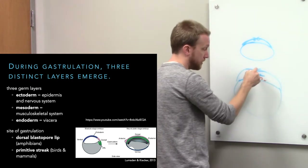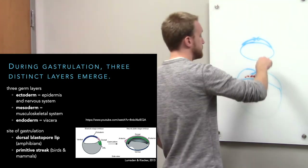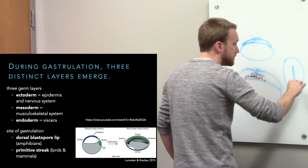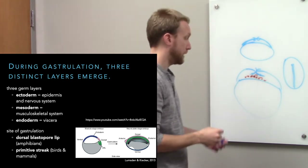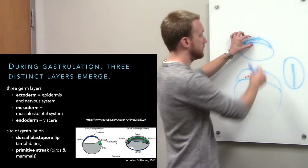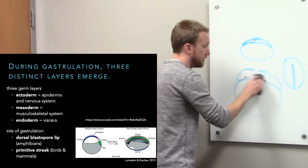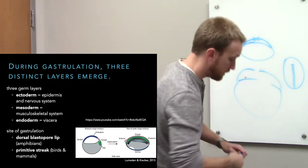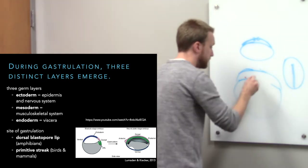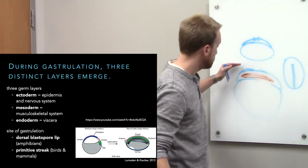Those cells used to live on the outside, came inward, and we're left with a streak. Looking down on that streak we see our disc — the inner cell mass — with bilateral symmetry and an organizer called the primitive node. When all is done, we have a three-layer disc with ectoderm, mesoderm, and endoderm. The site of gastrulation is called the blastopore in amphibians, where there's an organizer called the dorsal blastopore lip, and the primitive streak in mammals, where there's a primitive node.